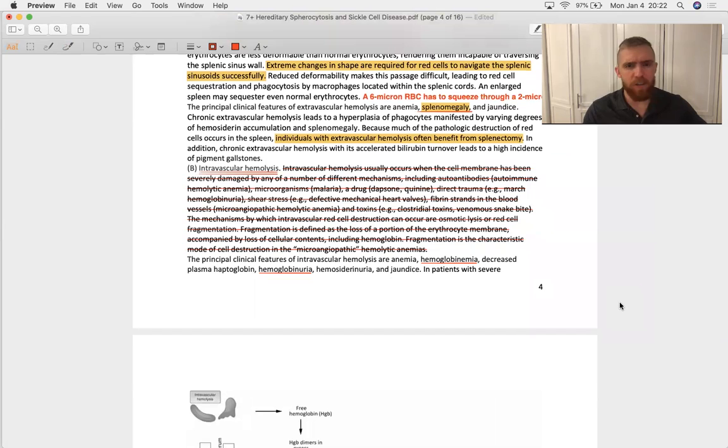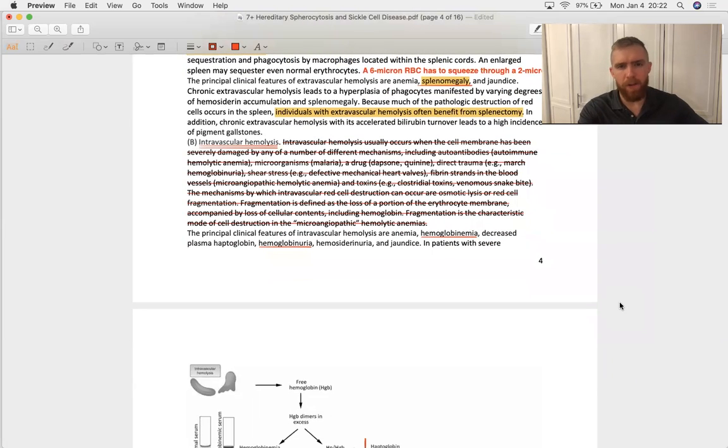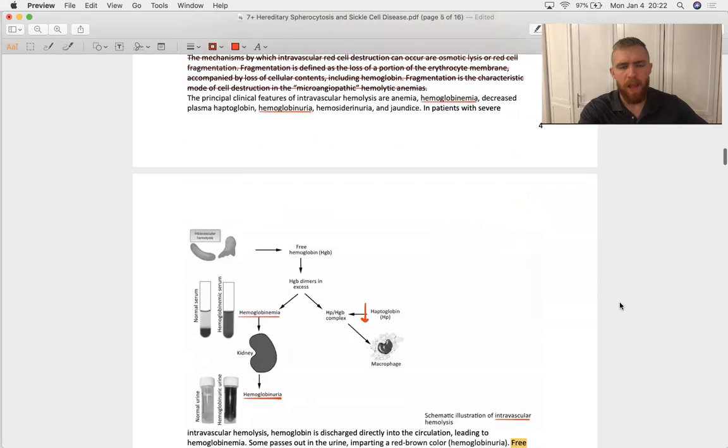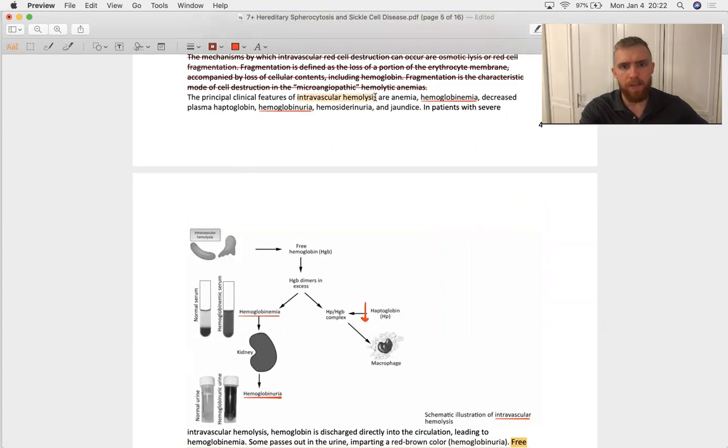We talk about intravascular hemolysis a little bit, usually due to direct trauma. Again, the aortic valve is going to be the number one cause of that. And if you have an intravascular hemolysis, you've got hemoglobinemia because one more time, macrophages pick up all that hemoglobin if it's extravascular hemolysis, but not so if it occurs in the bloodstream. You also see a hemoglobinuria, it's got to get out of the body somehow.